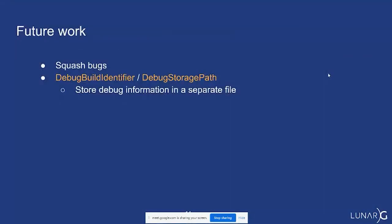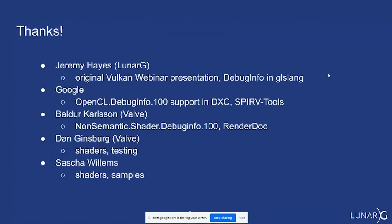Future work: squashing bugs. Also, in the spec for the debug info there's a capability to store the debug information external to SPIR-V, so your shaders are not bogged down with it — you can keep that information off to the side. Generating this information can increase the size of your SPIR-V by two to three times, so it's a little bulky right now. Being able to keep this information off to the side would be nicer.